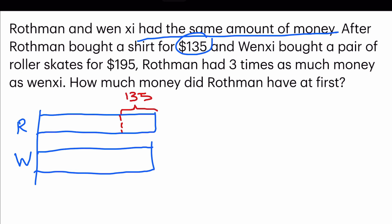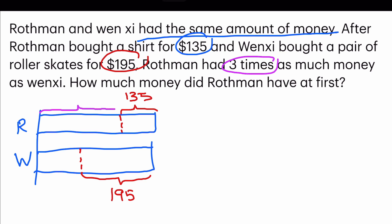And Wensi bought a pair of roller skates for $195. Notice that it's more, so I'm going to chop it onto here, which is $195. Now they say that Rothman had three times as much money as Wensi. So Rothman's portion is equal to three units, and as for Wensi, it is one unit.